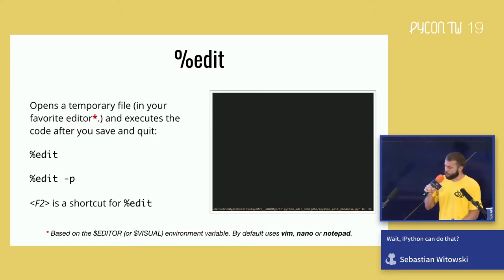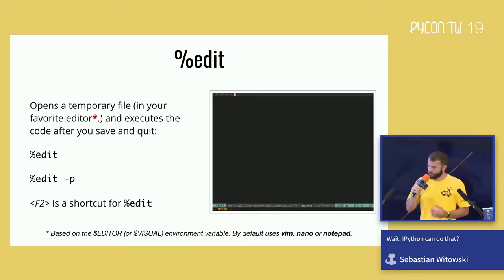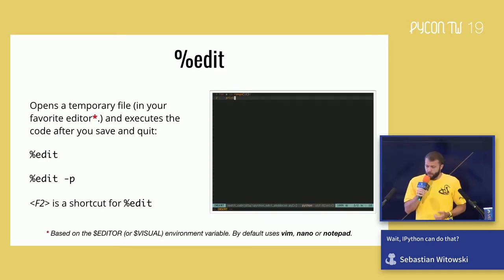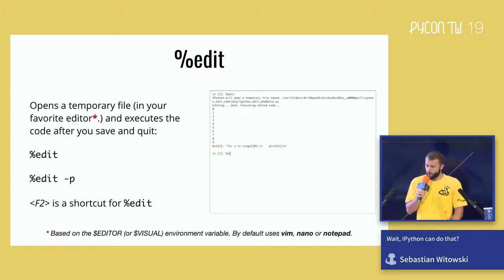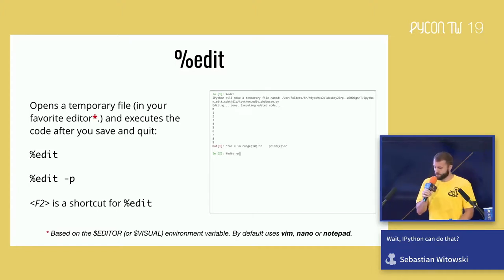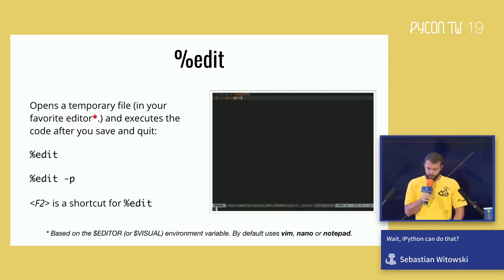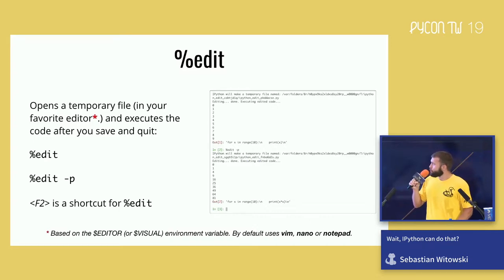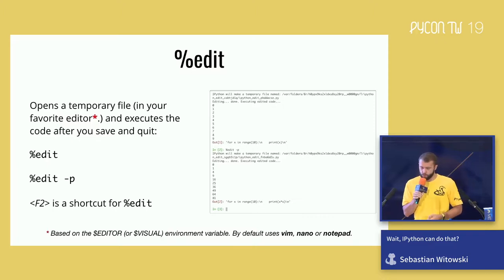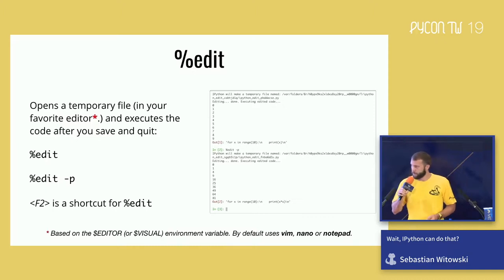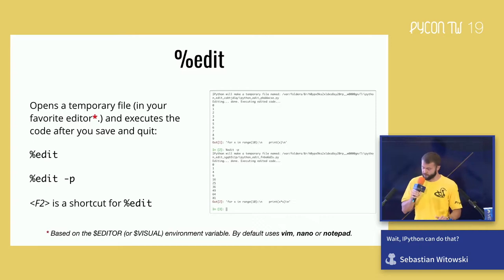Even though writing multiple lines of code in IPython is easier than the default Python REPL thanks to smart indentation, you can make it even easier with the `edit` magic function. It will open a temporary file in your favorite editor where you can type the code, and after you save and close the file IPython will execute it. Each time you run `edit` with no parameters it opens a new file, so if you want to go back and edit the same file as last time you have to provide the `-p` parameter. And you can just press F2 as a shortcut instead of typing `%edit`.